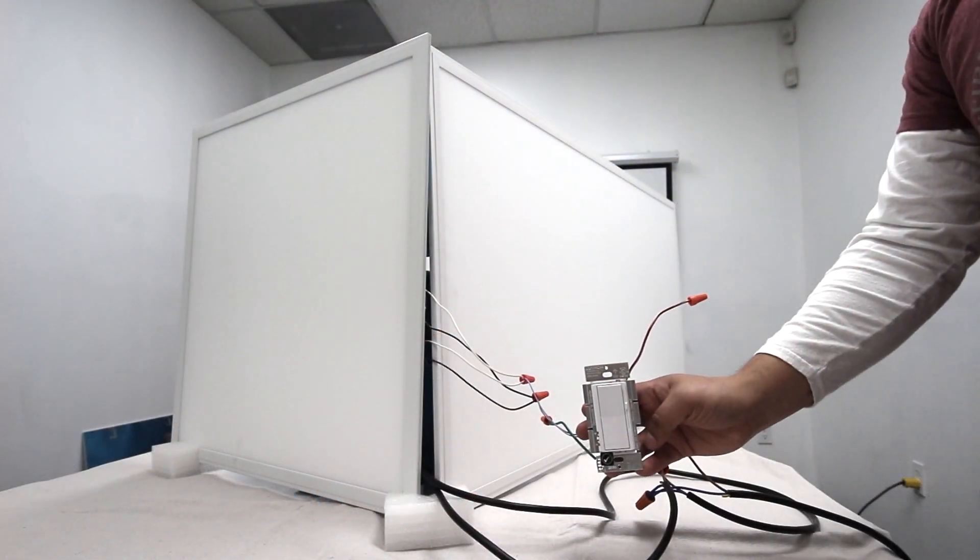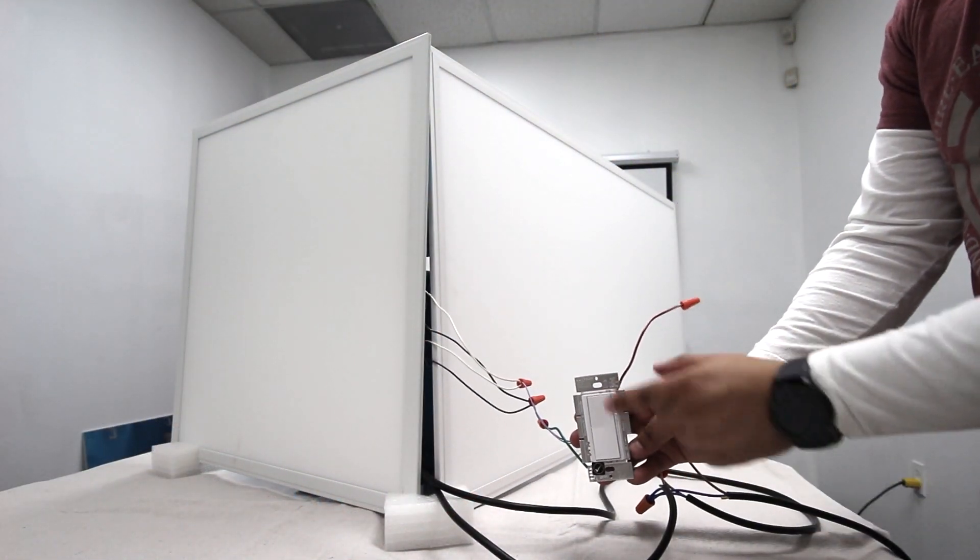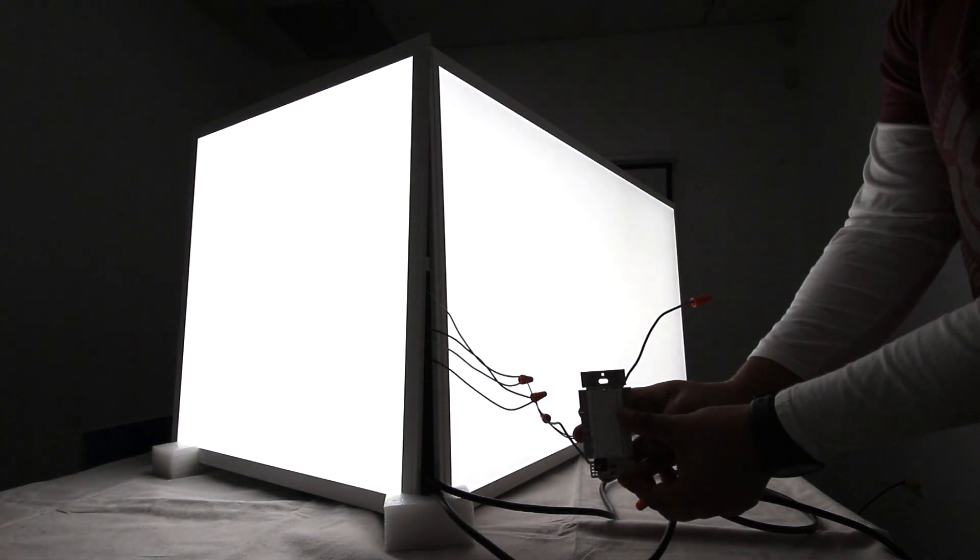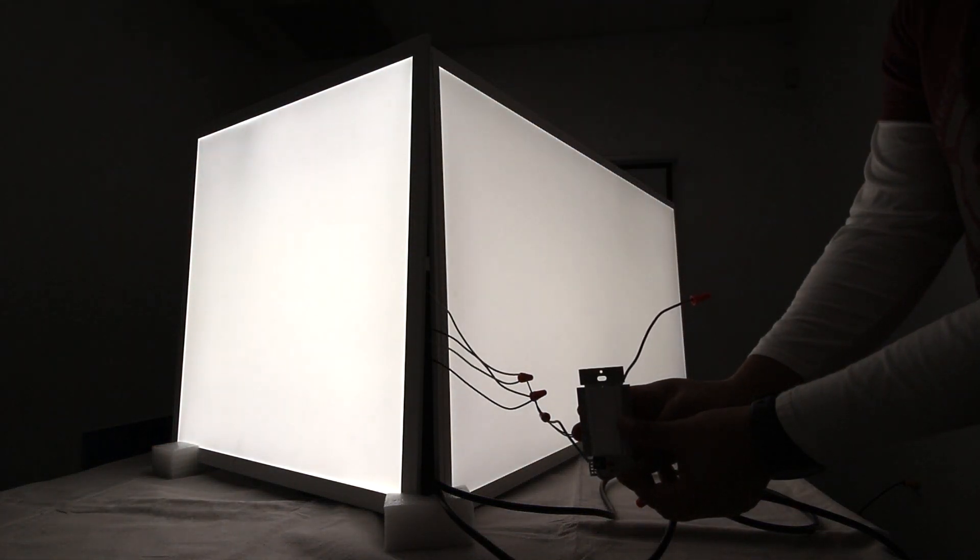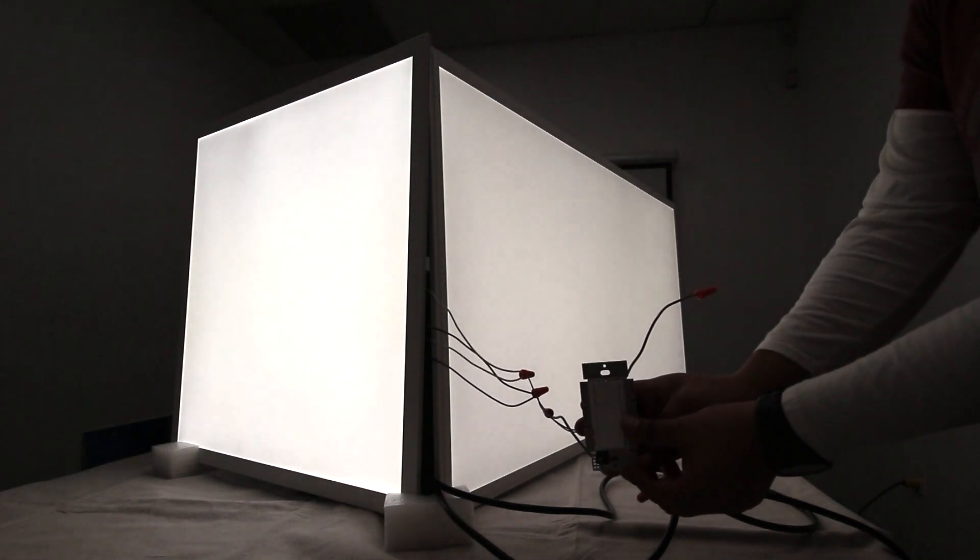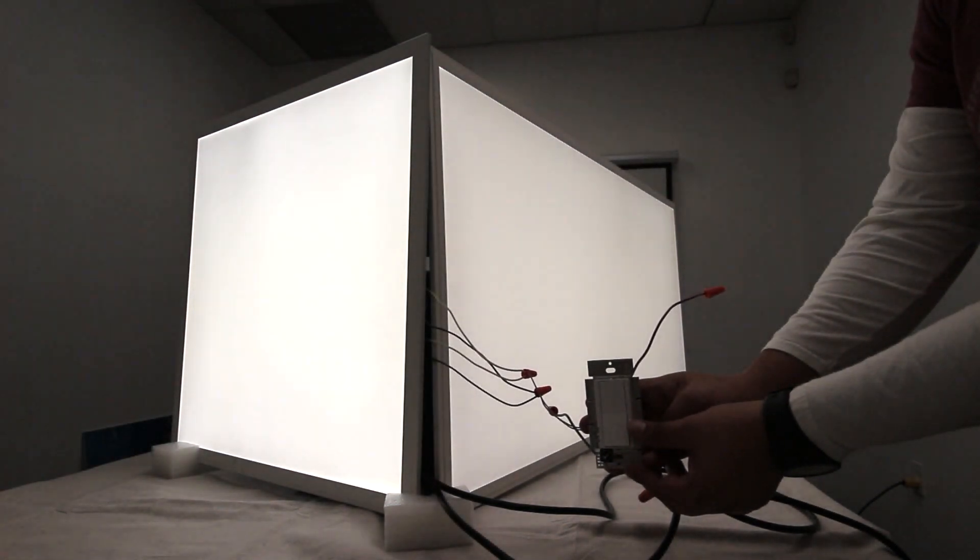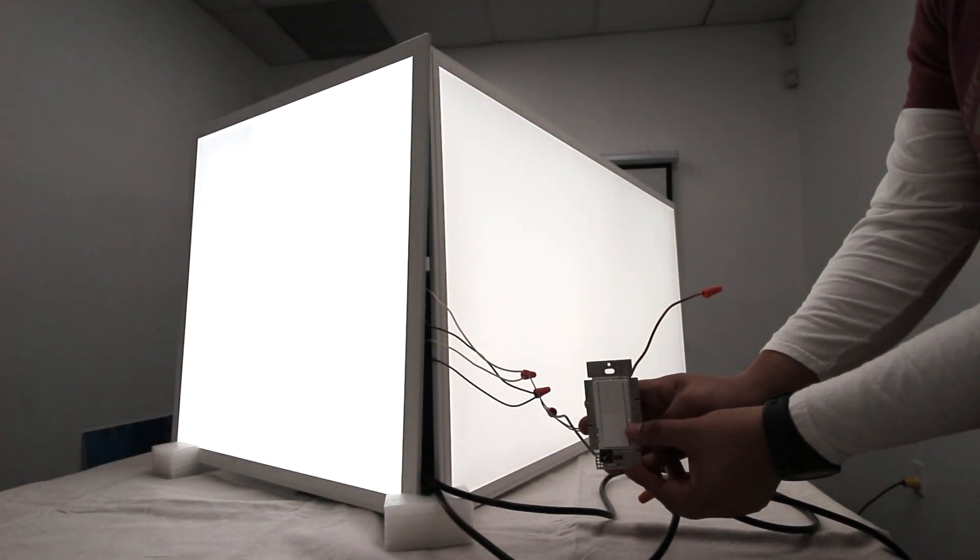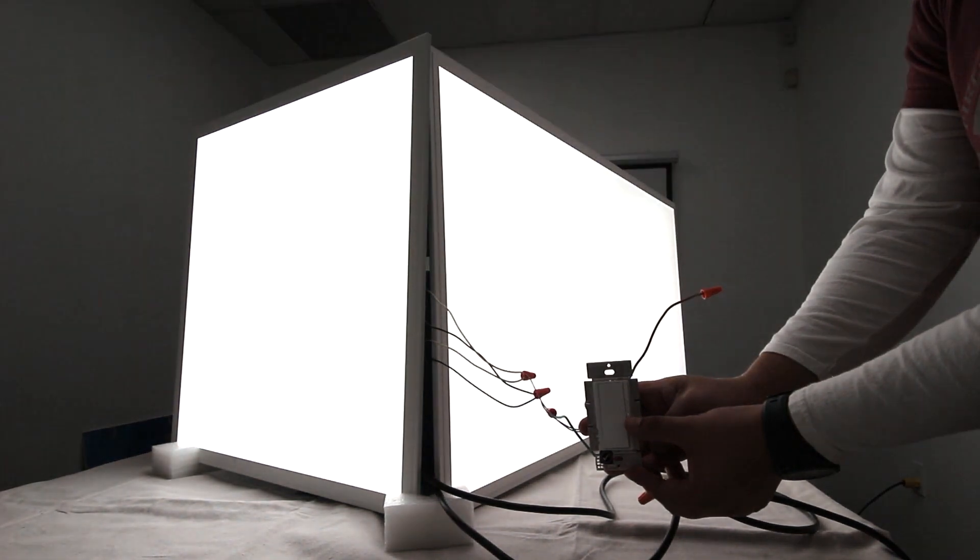So as you can see, the dimming scale works well here. Keep it all the way up at 10 volts and it'll give you full output. Slide it down to say halfway and you'll get 50% output. The great thing about this is that when you lower the output, you also lower the energy draw, so you'll get that little bit of extra savings.